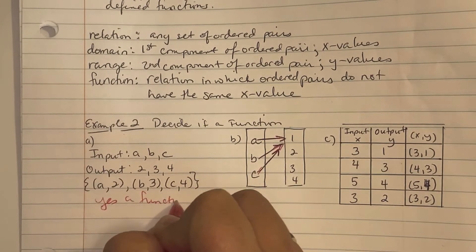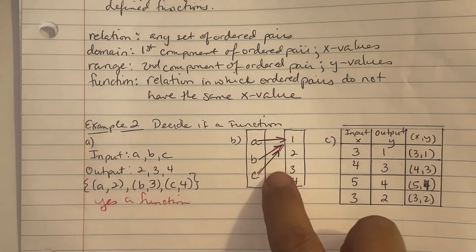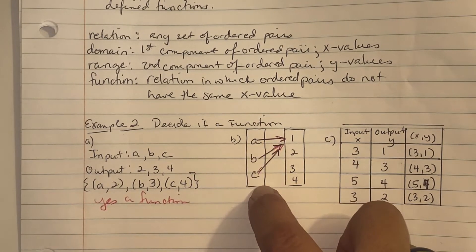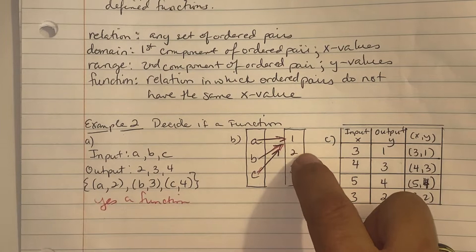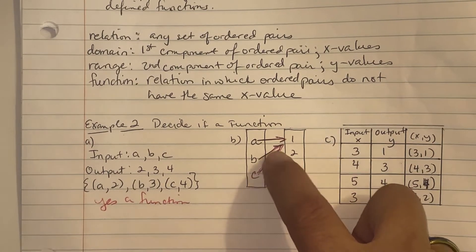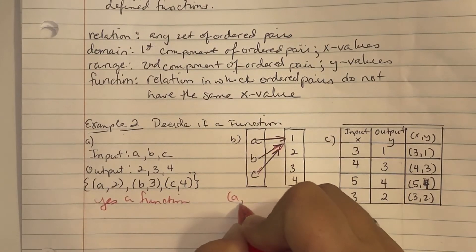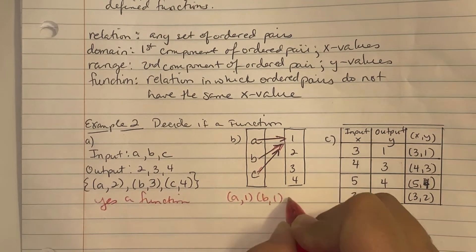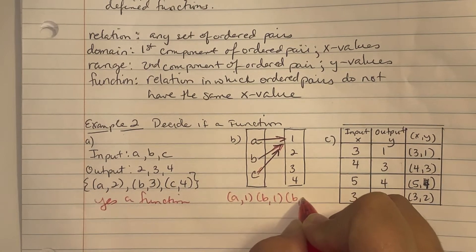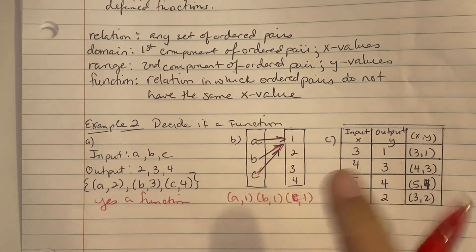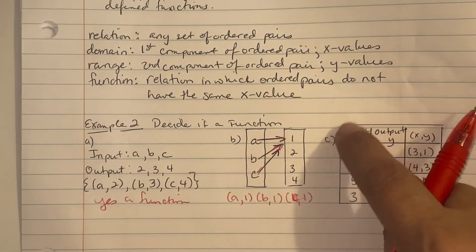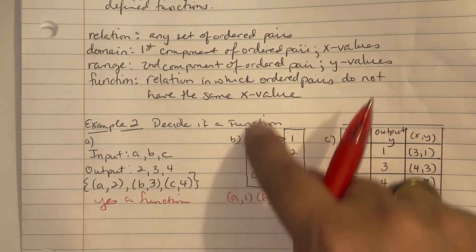For part b, they gave us an input situation of a, b, c and the outputs are one, two, three, four. We write them as ordered pairs. Since all three inputs went to the same output, the input values did not repeat — this is also a function.